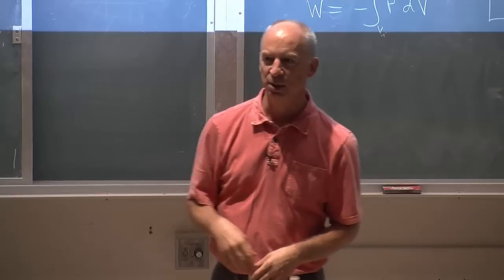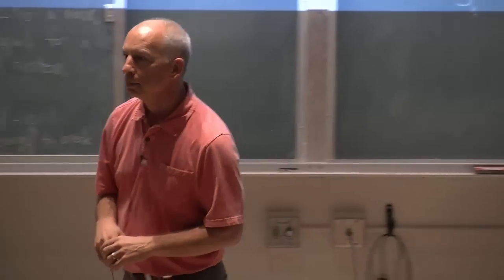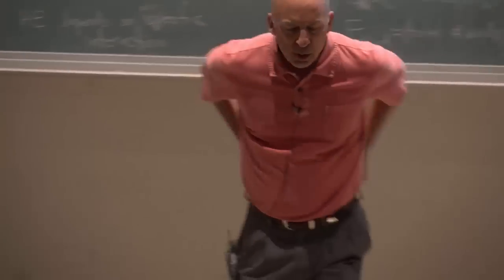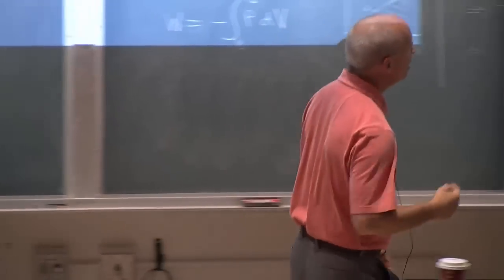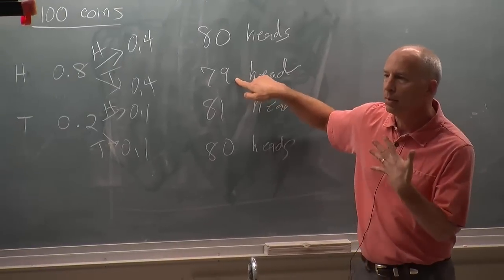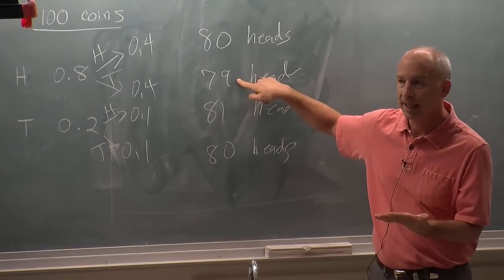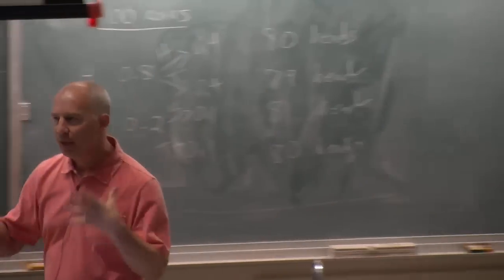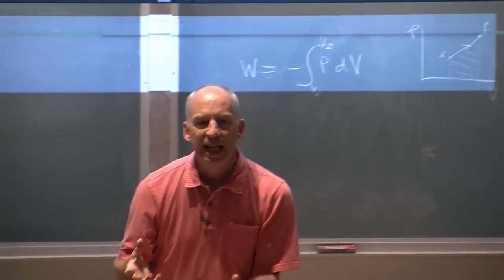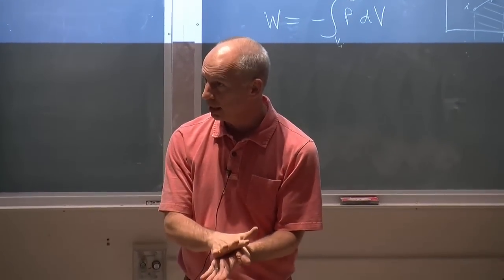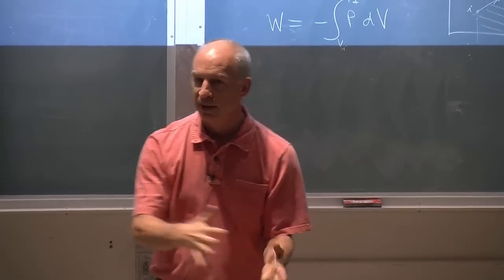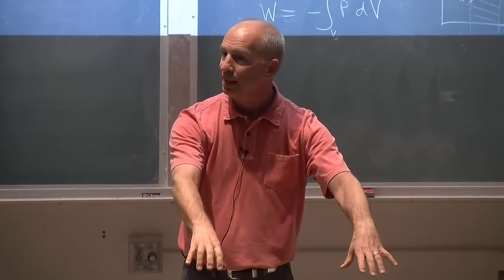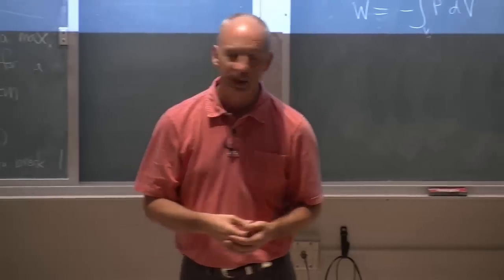Does diffusion increase or decrease entropy? When you go from a less likely state, 80 heads and 20 tails, if I throw these coins on the ground, 80 heads and 20 tails is less likely, fewer microstates than 50-50. So the entropy for 80 heads and 20 tails is smaller than the equilibrium entropy.